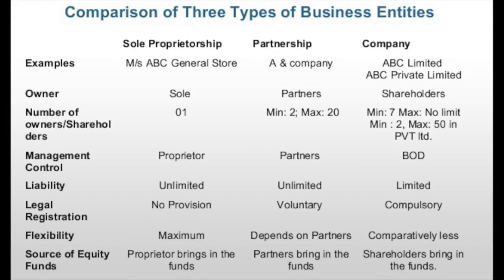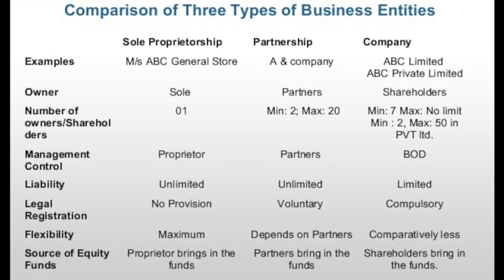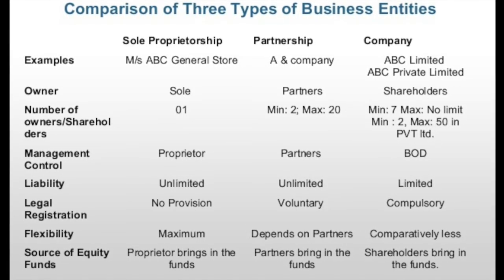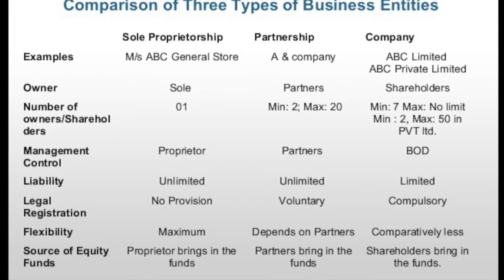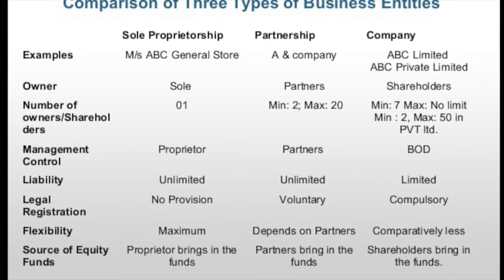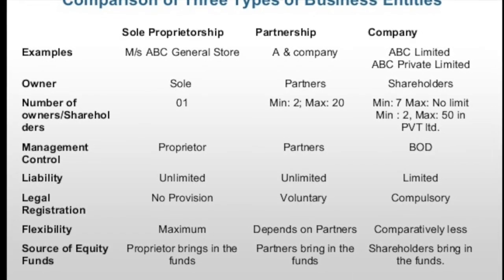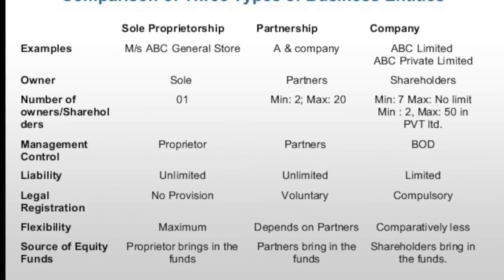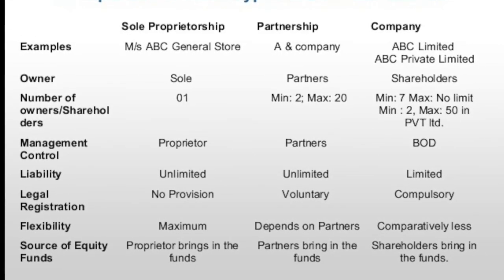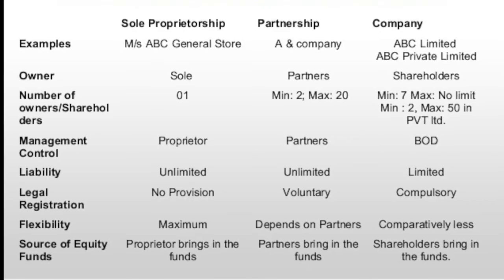These next bits will be on the test, so make sure you know them. Define sole proprietorship: a business owned and managed by a single person. Ann's Snack Bar was owned by Ann — she didn't have anybody else investing in it, didn't have a partner. So that was all hers: all of her risk, all of her liability, but also all of her profit.